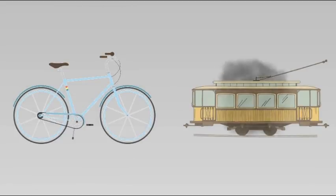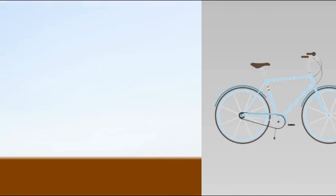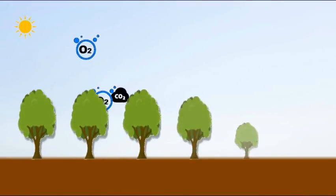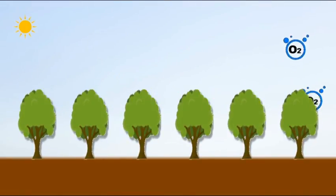We can use bicycles or public transportation instead of cars to reduce carbon dioxide emissions. We can plant more trees that absorb carbon dioxide from the atmosphere and release more oxygen.